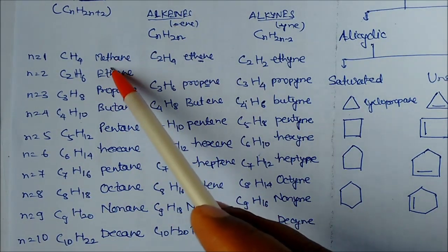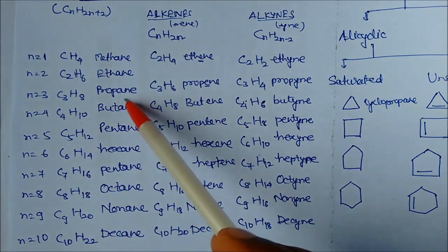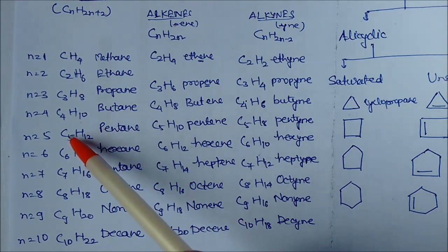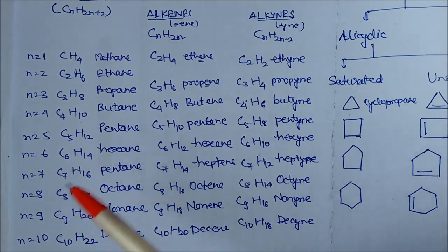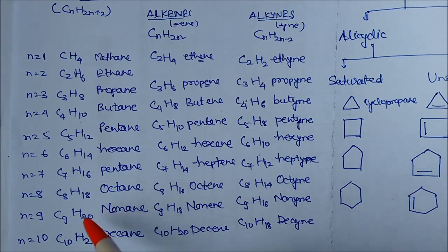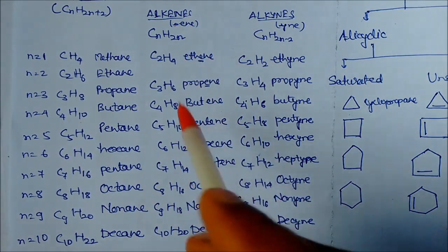For n=1 it is called methane, n=2 ethane, n=3 propane, n=4 butane, n=5 pentane, n=6 hexane, n=7 heptane, n=8 octane, n=9 nonane, and n=10 decane. Similarly for alkyne, the series starts from C2.